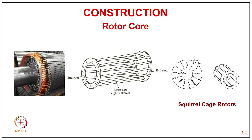Sometimes rotor bars are made with copper as well, but the processing and high-temperature brazing present practical issues. Apart from that, the cost of copper is much higher than aluminum — aluminum costs only 12 to 13 percent of copper, and its density is one-third of copper's, so for the same volume, the weight of aluminum is one-ninth that of copper.